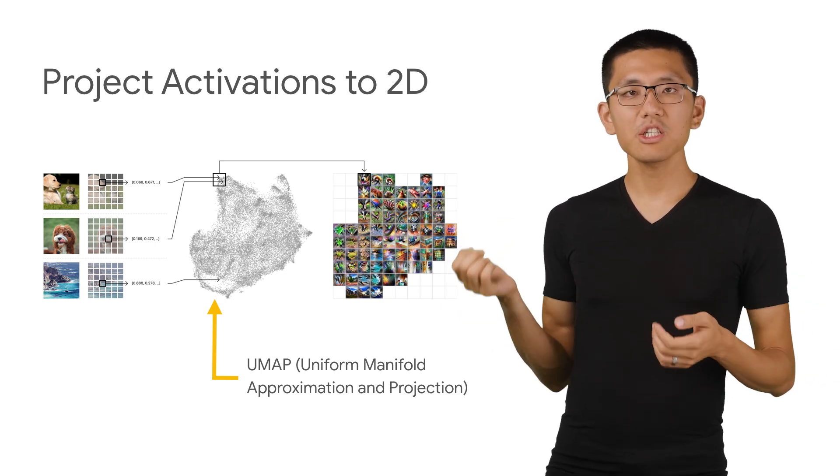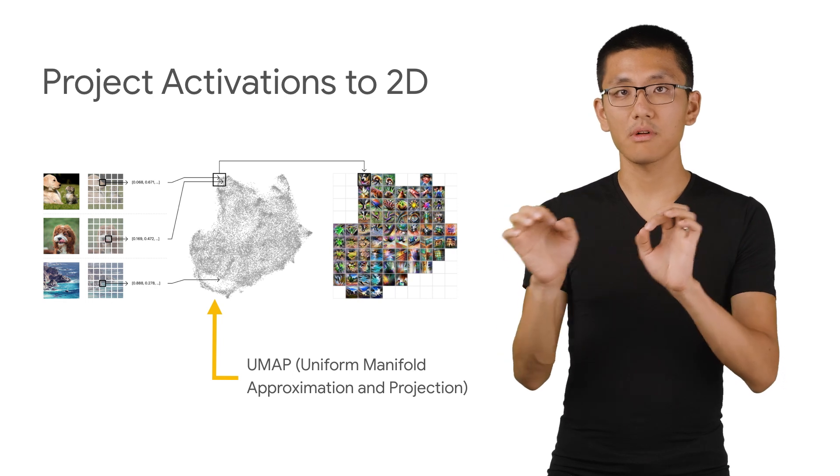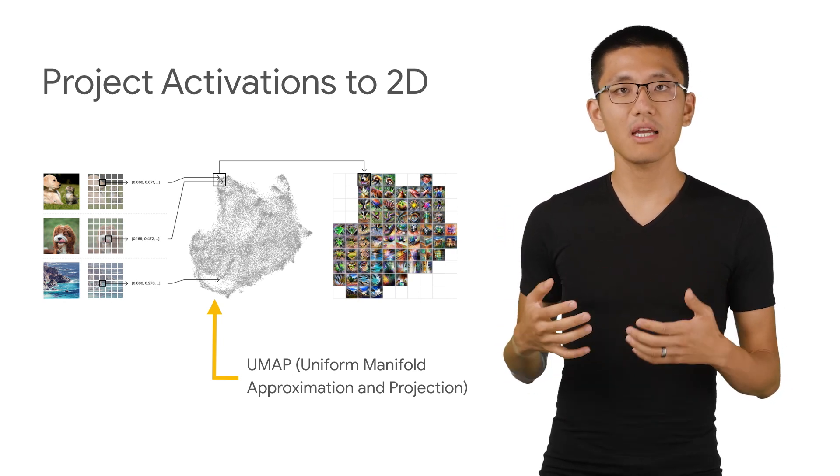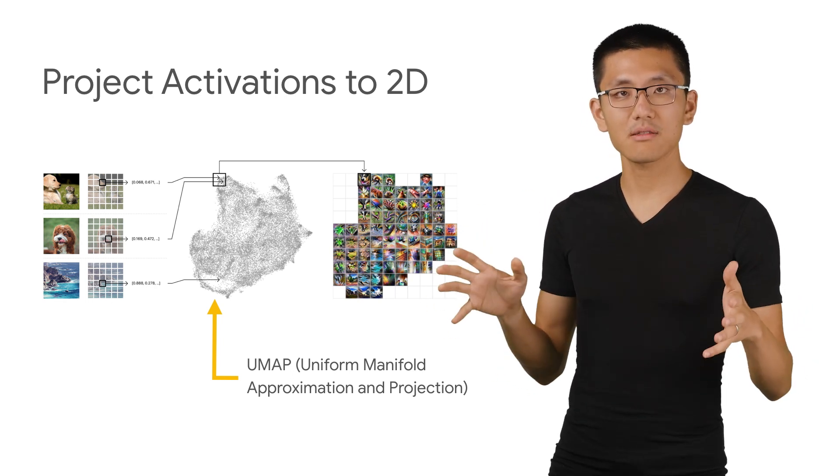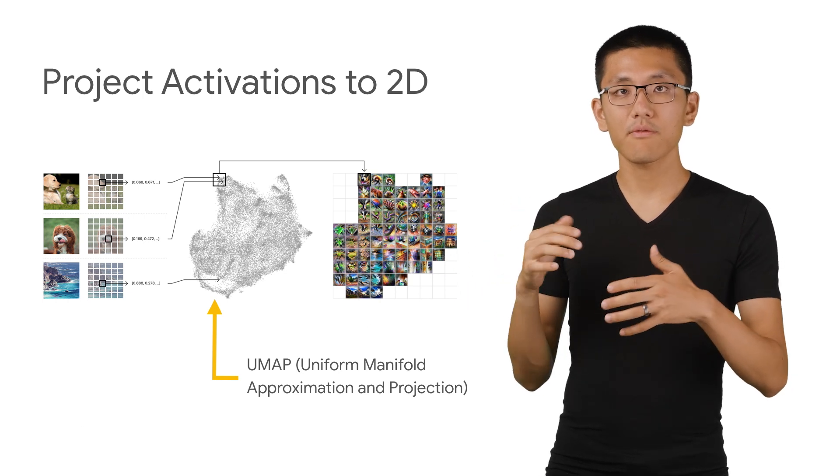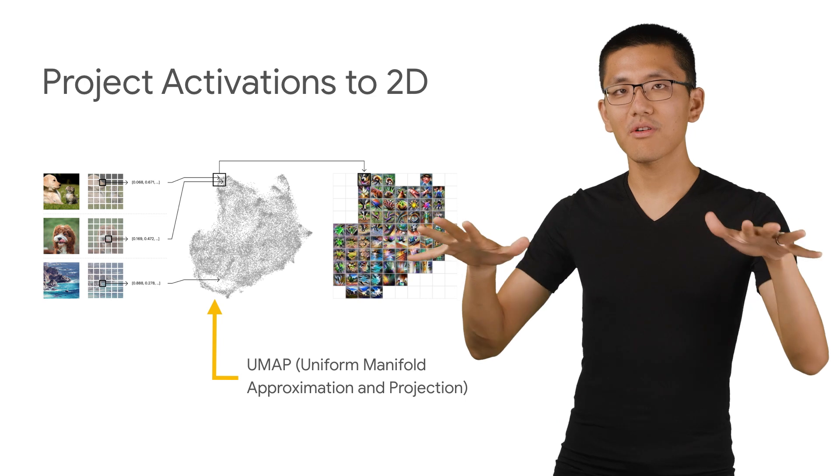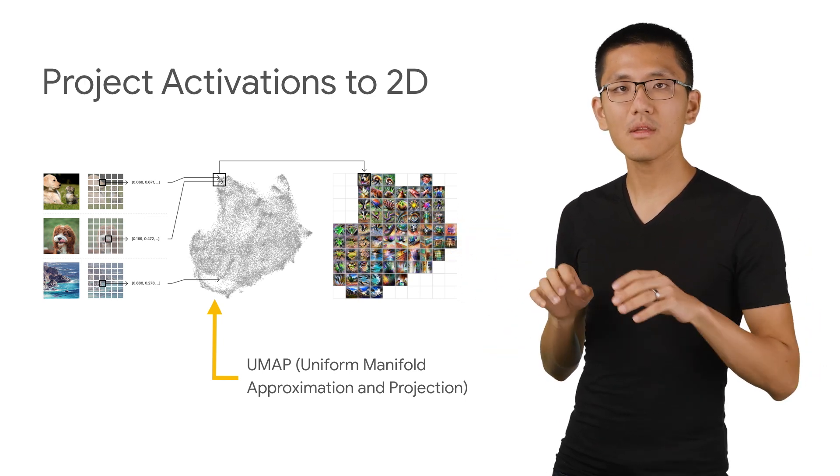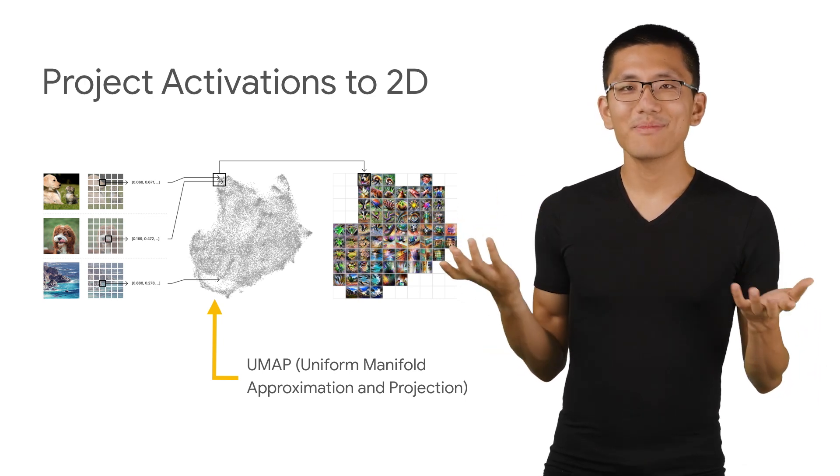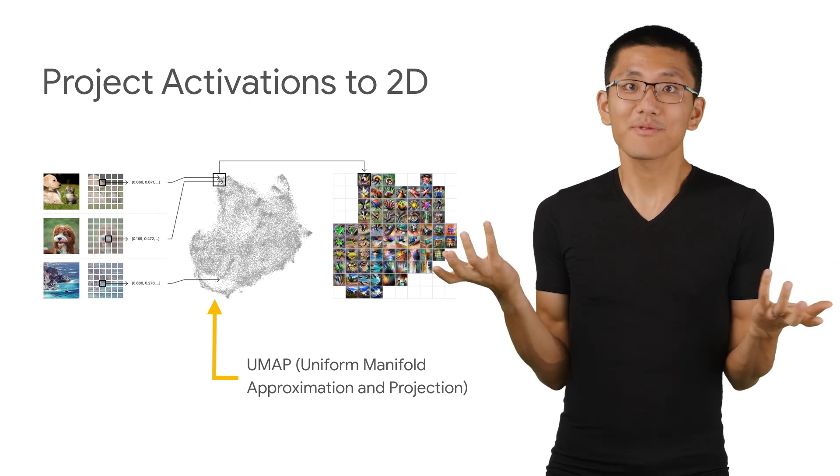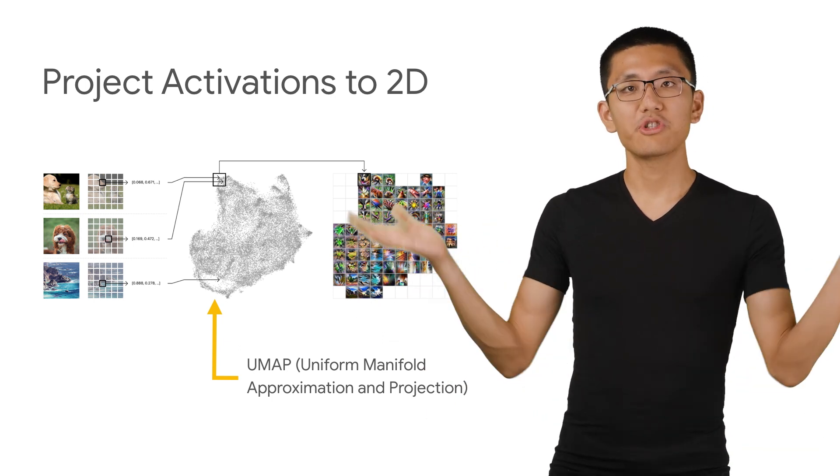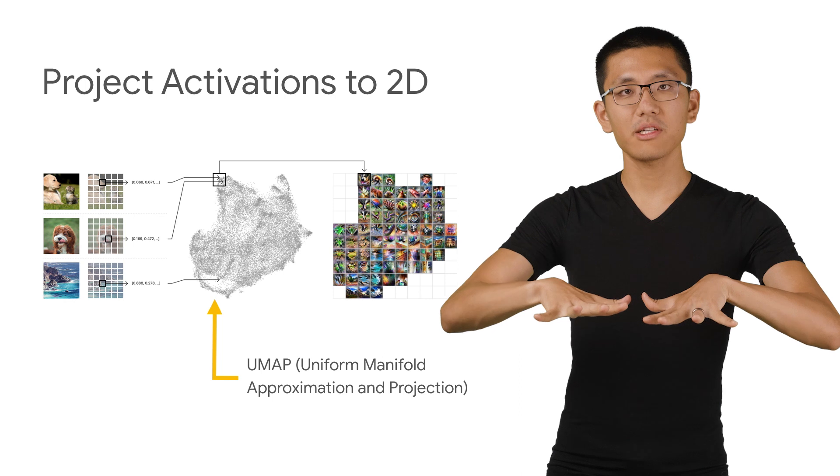And if we position our activations, each of these subgrids, into their respective locations in this higher dimensional space, we now have, for our one million example images, broken up and scattered across this landscape. Unfortunately, high dimensional spaces are tough for us to visualize. So we can project this space down to two dimensions.